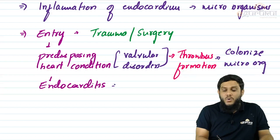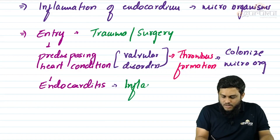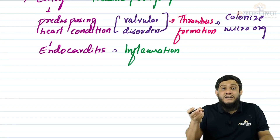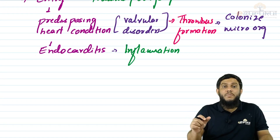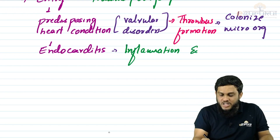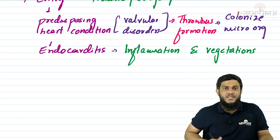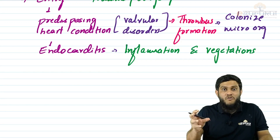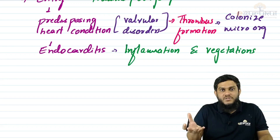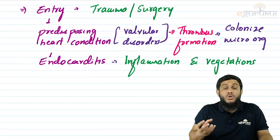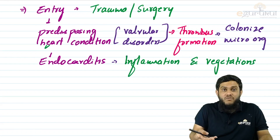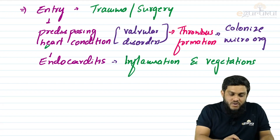After colonization, the microorganisms cause inflammation, and the damaged cells collect as cell debris. This cell debris, along with the microorganisms, forms a mass-like structure on the valves called vegetations. Vegetations are the characteristic feature of infective endocarditis — they are a mass-like structure consisting of microorganisms and cell debris seen on the valves.